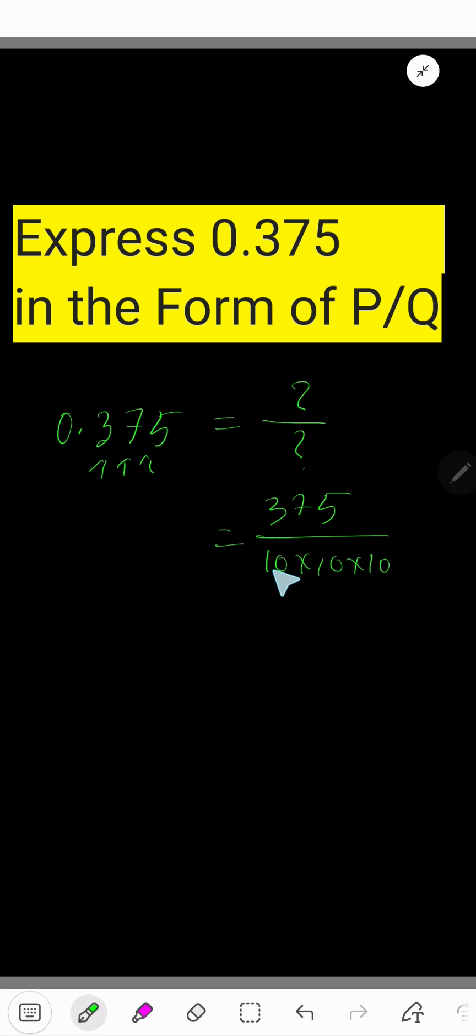Look, this 375 is divisible by 5 as its last digit is 5. This 1000 is also divisible by 5. If you divide this 10 by 5, you will get 2.